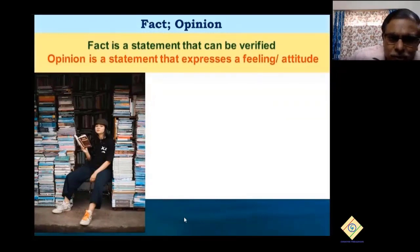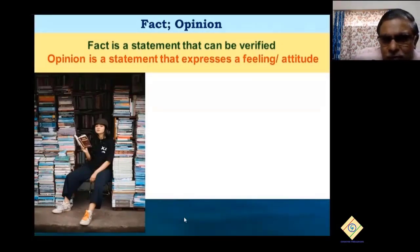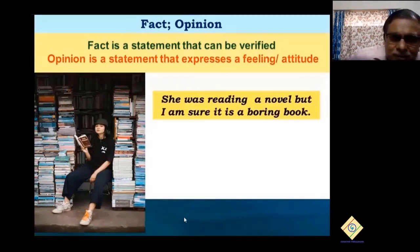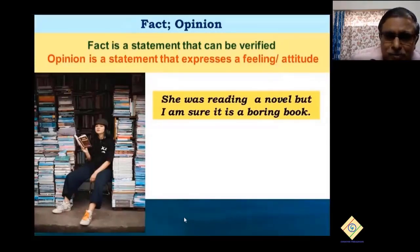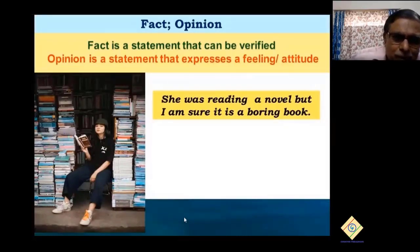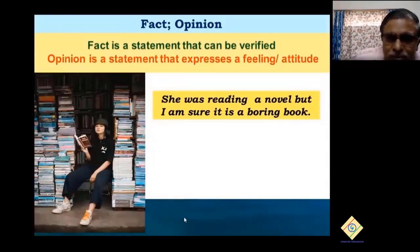Fact and opinion: fact is something you can verify, but opinion is when you are expressing your feeling. For example, if somebody says 'she was reading a novel, but I'm sure it's a boring book' — the first part is a fact you can verify, but 'it's boring' is an opinion. Something boring to one person will be interesting to another. You cannot have opinions in scientific writing; when you're trying to convince something through continuous research, opinions get rejected easily.